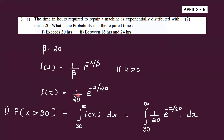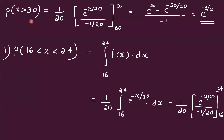For the first part, P(X > 30) = integral from 30 to infinity of f(x) dx. Substituting f(x) = (1/20) * e^(-x/20), this becomes (1/20) * e^(-x/20) divided by (-1/20), evaluated from 30 to infinity.